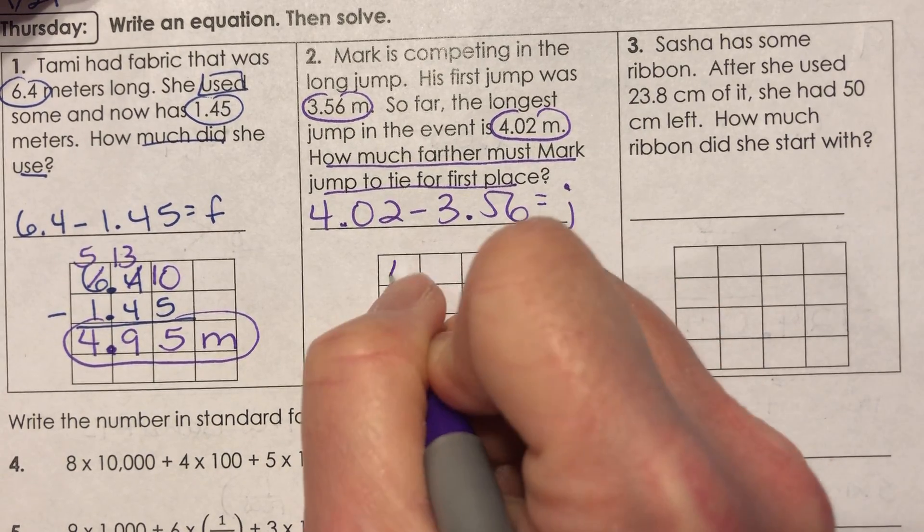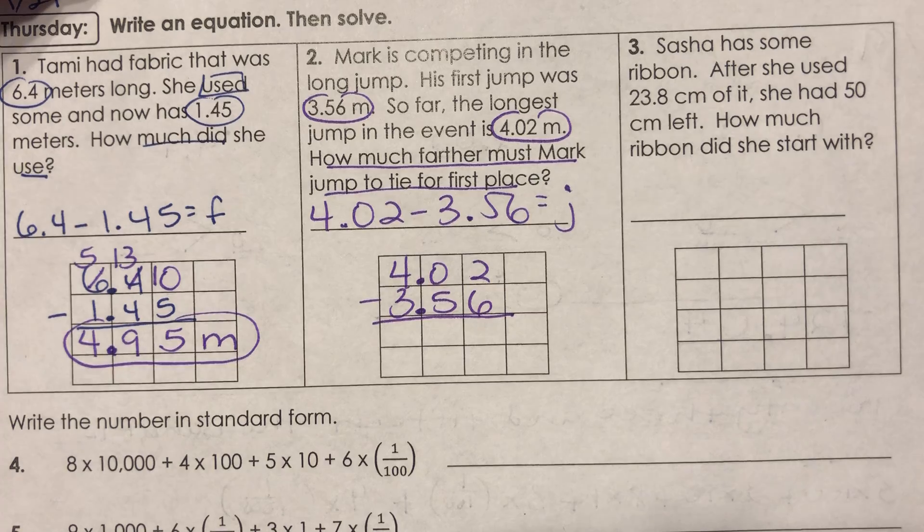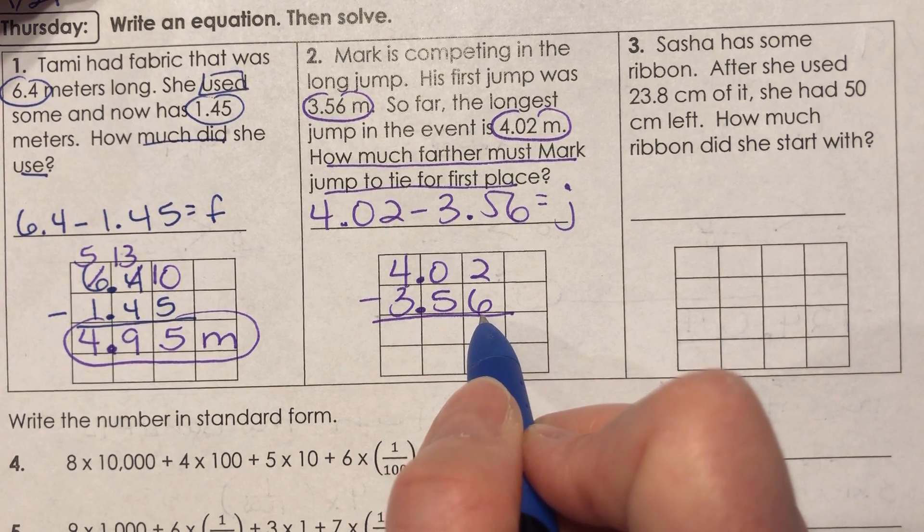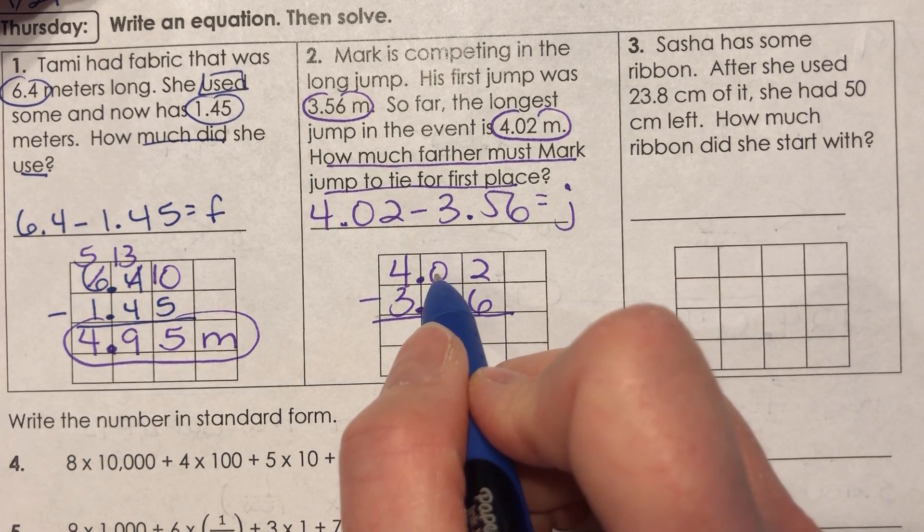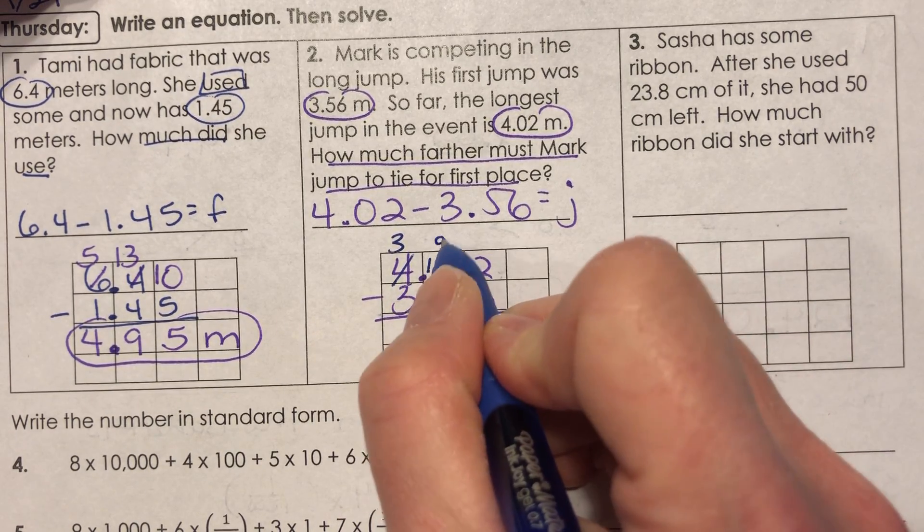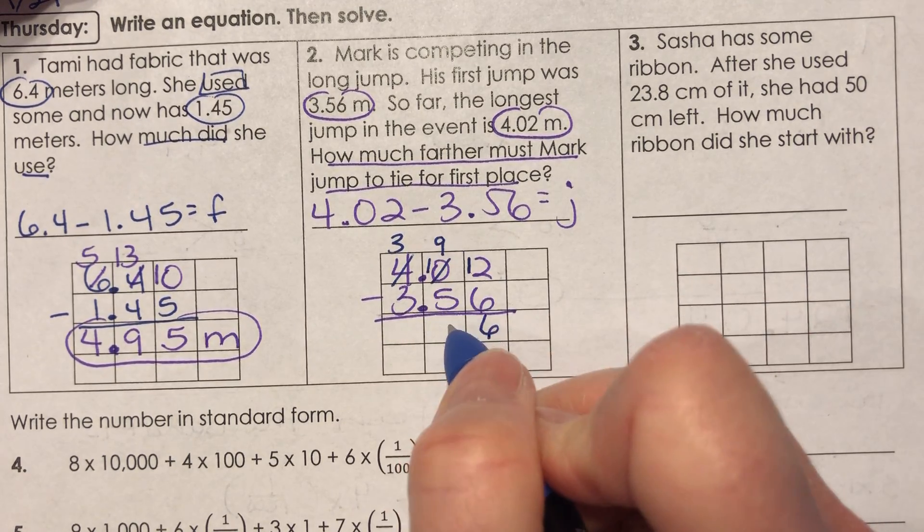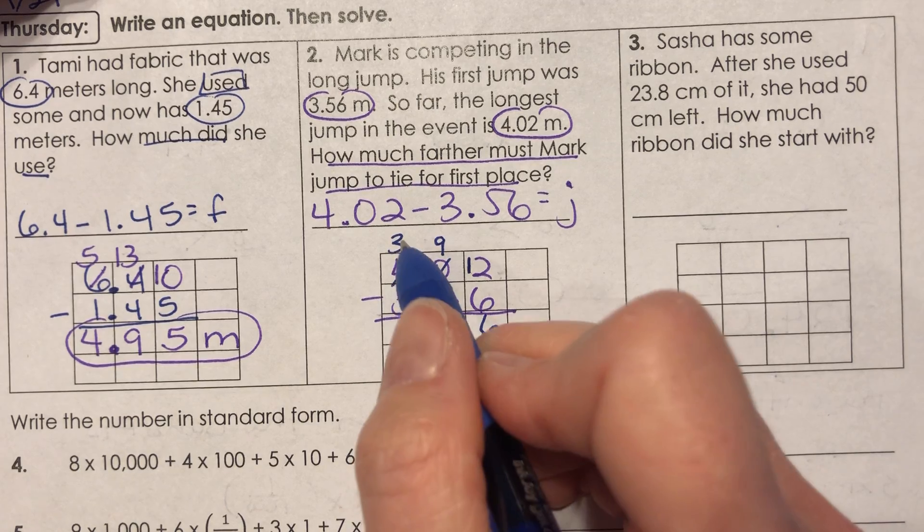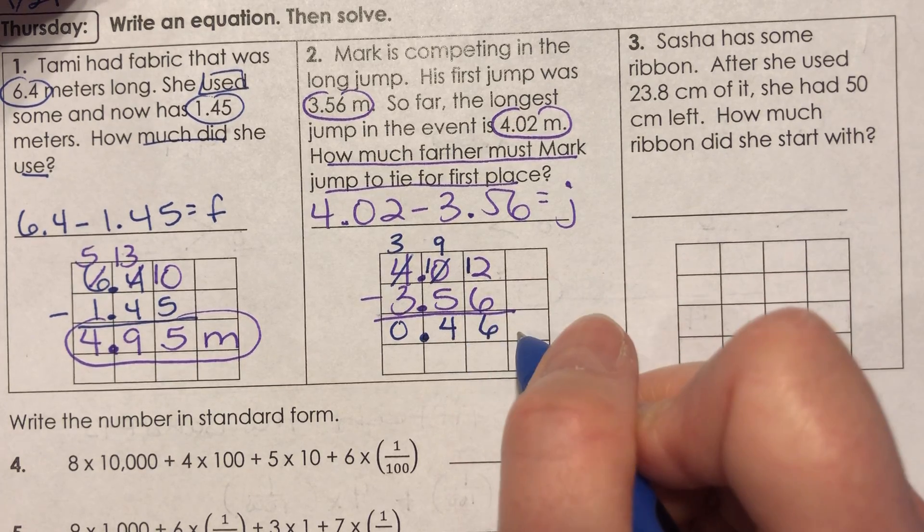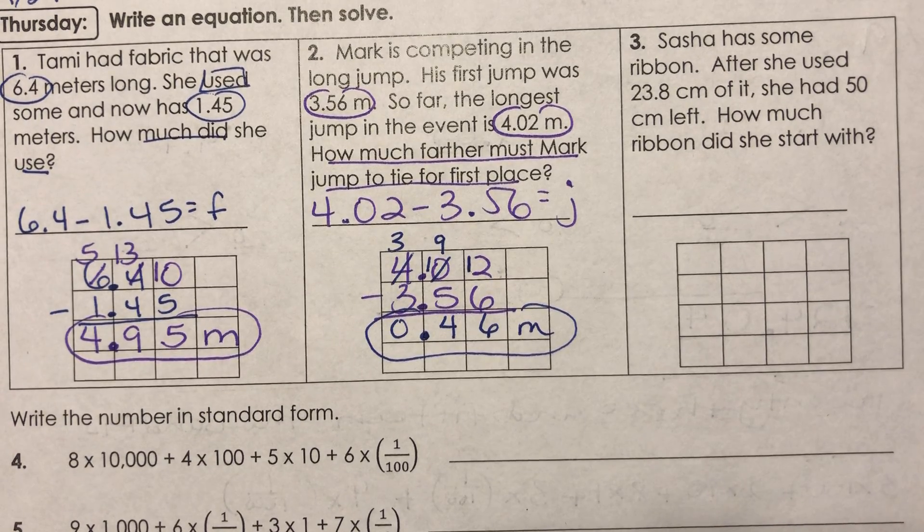So this is the subtraction problem: 4.02 minus 3.56 equals J for jump. Sounds good. Alright, 4.02 minus 3.56, so you should have those lined up. And I look and I can't borrow from this zero. First off, I can't take six away from two, right? So I need to borrow. This has nothing. I'm gonna borrow from this four and it becomes three, so now I have 10. I'm gonna borrow from this 10, it becomes nine, and now I can do 12 minus six to get six. And nine minus five is four. I drop down my decimal point, three minus three is zero. So 0.46 or 46 hundredths of a meter is what J would equal. That's how much farther he would need to jump to be able to tie.